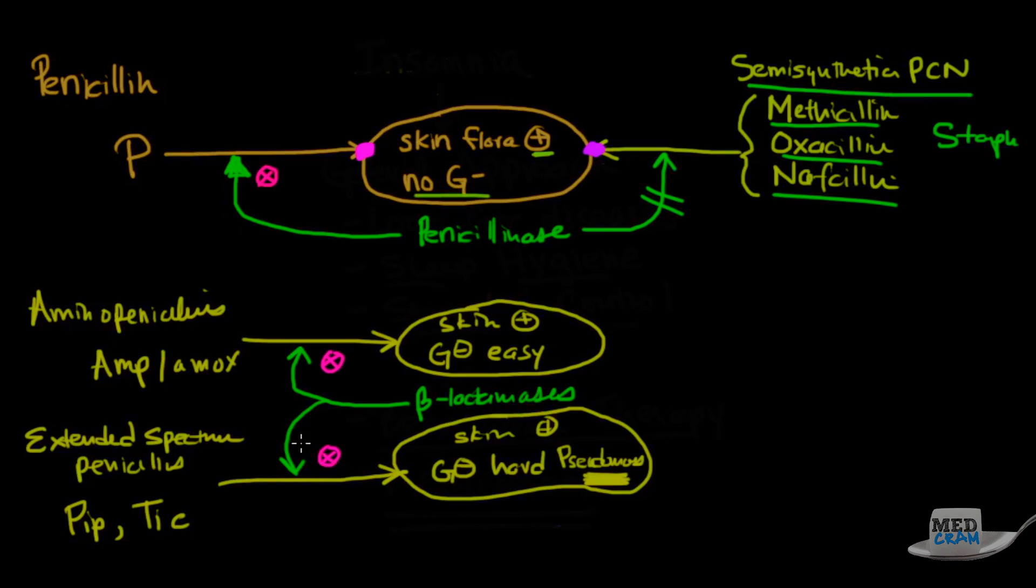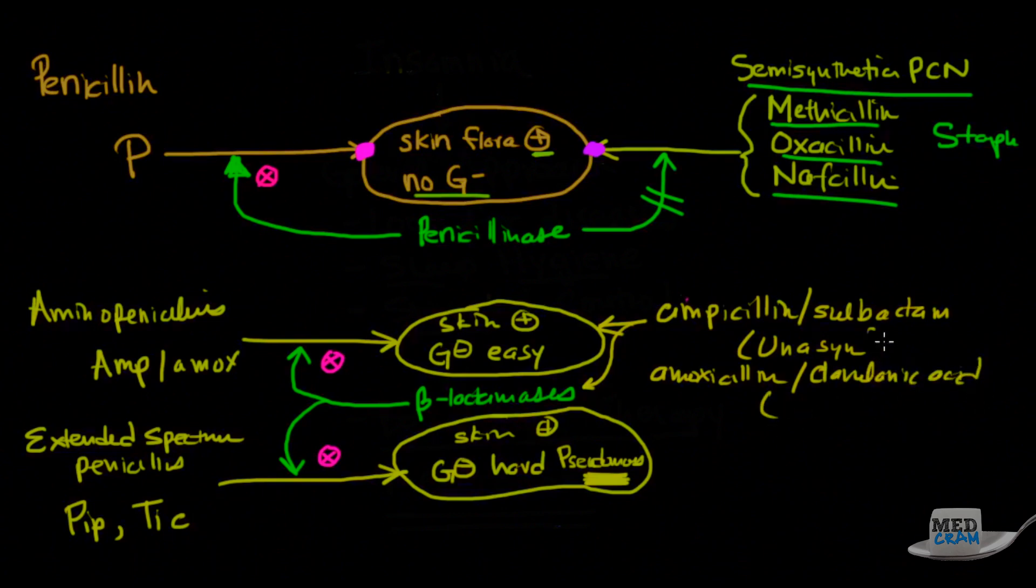So what we did was we started adding these beta-lactamase inhibitors. When we took, for instance, ampicillin and coupled it with sulbactam to make Unasyn, now we could attack that bug because it would also attack the beta-lactamase and take it out. Also, we would take amoxicillin and couple that with clavulonic acid, and we would come up with Augmentin.